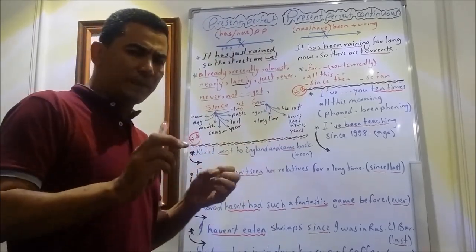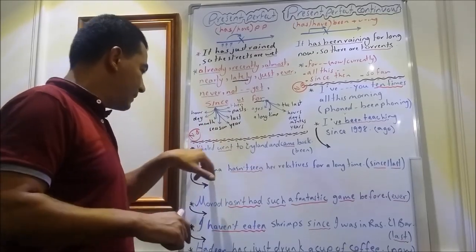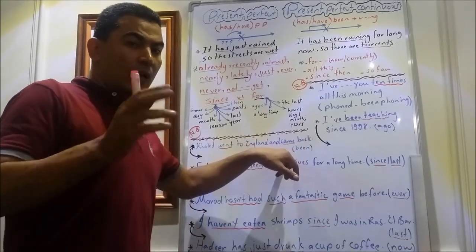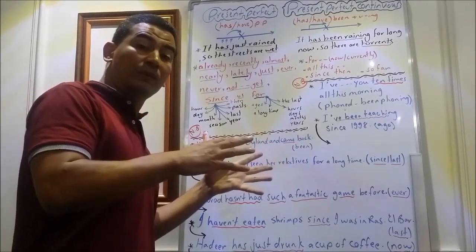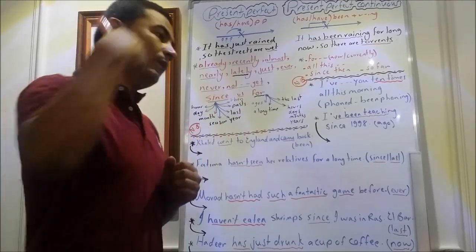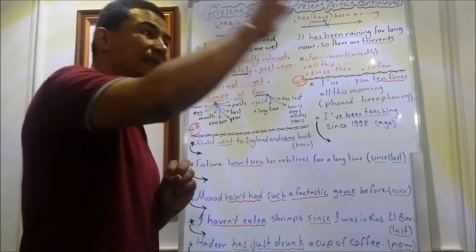Of course, we have some things that have to do with present perfect. If I say this sentence, Jared went to England and then came back, use been. Of course, we have difference between have been to and have gone to. Have been to, he went to a place and came back, but have gone to, he is still there.